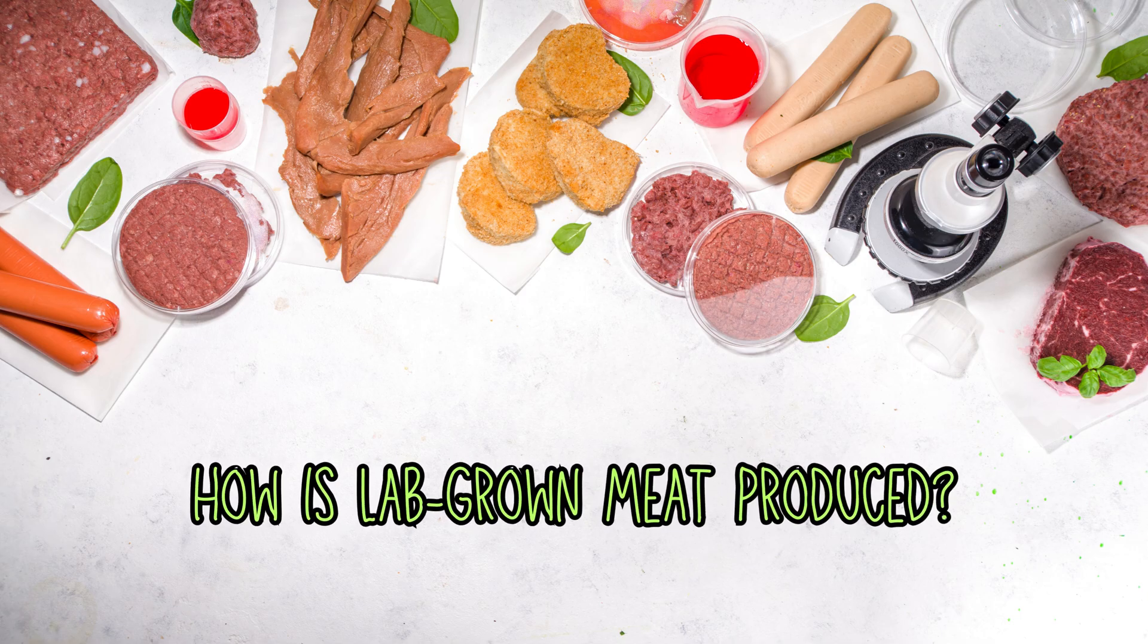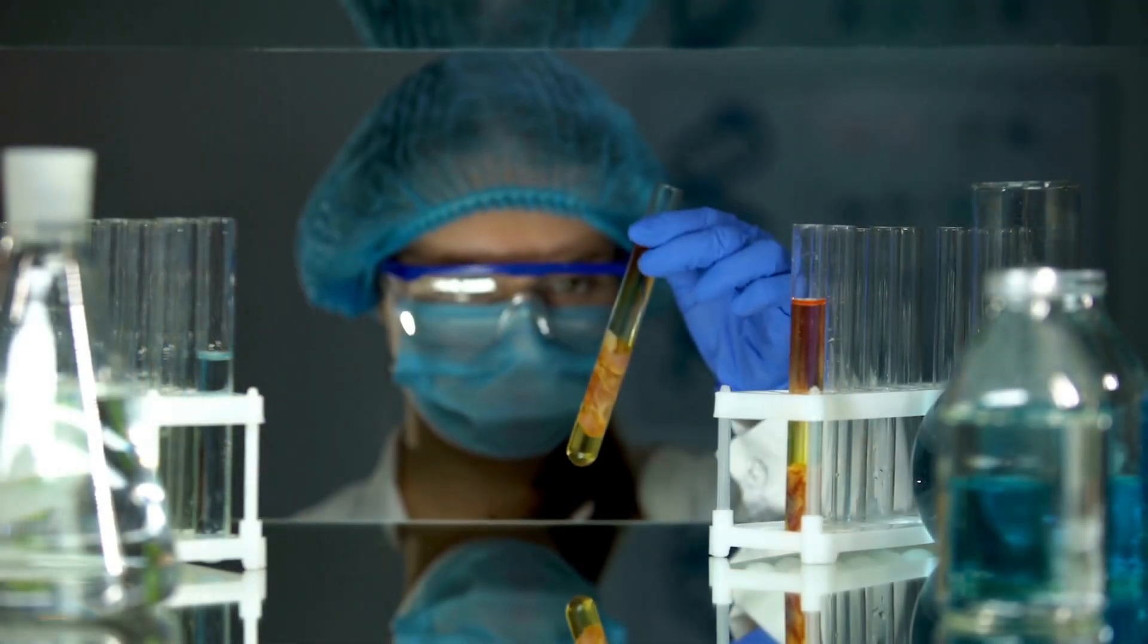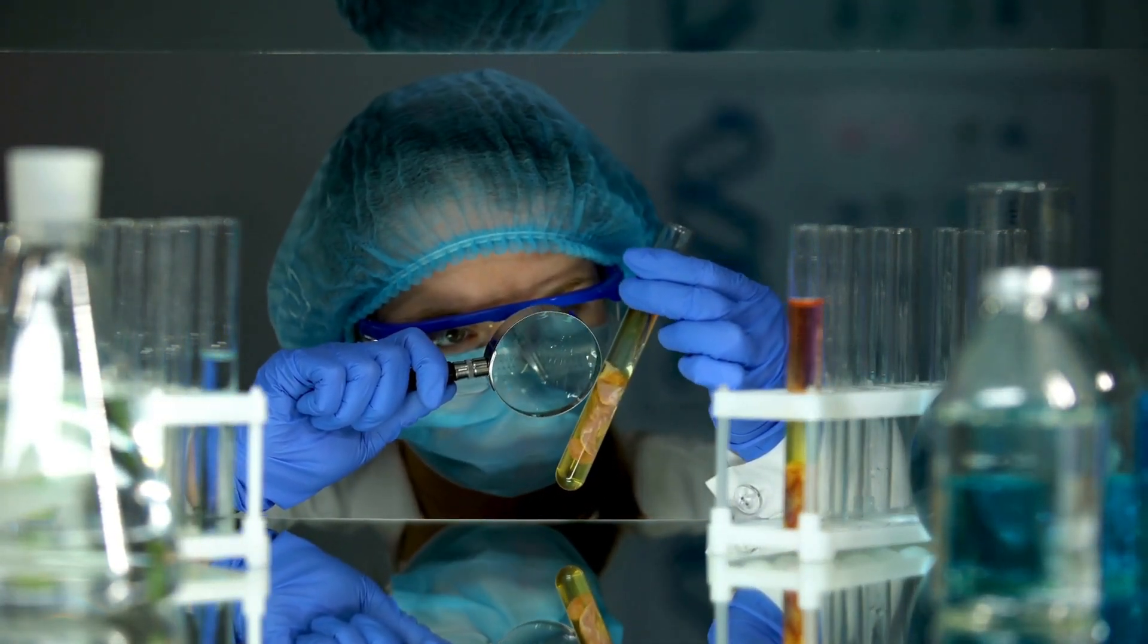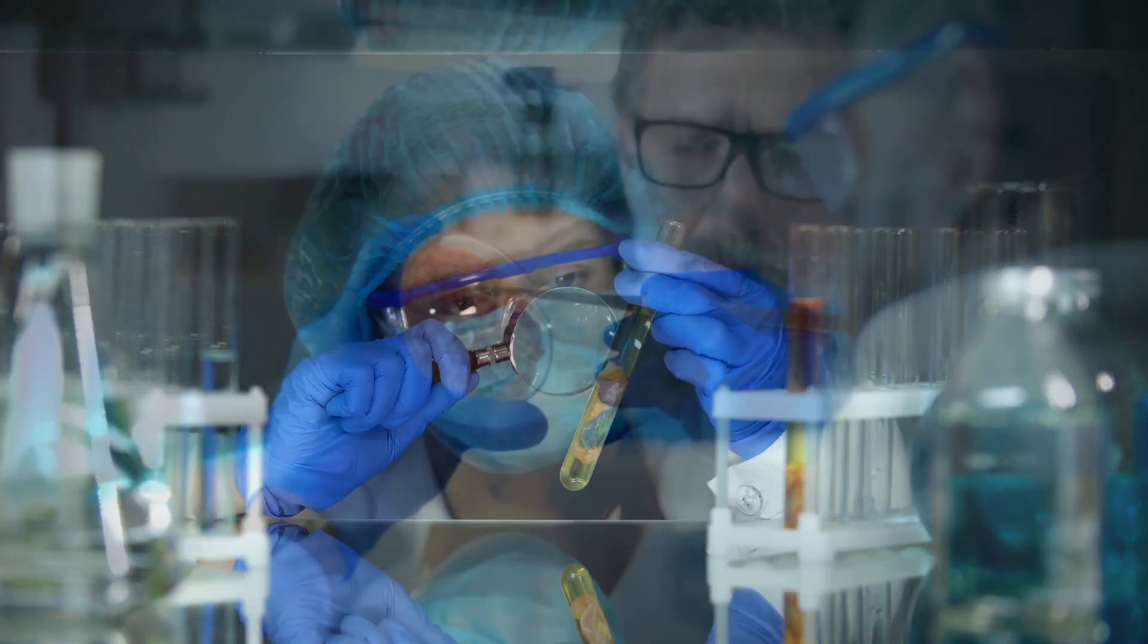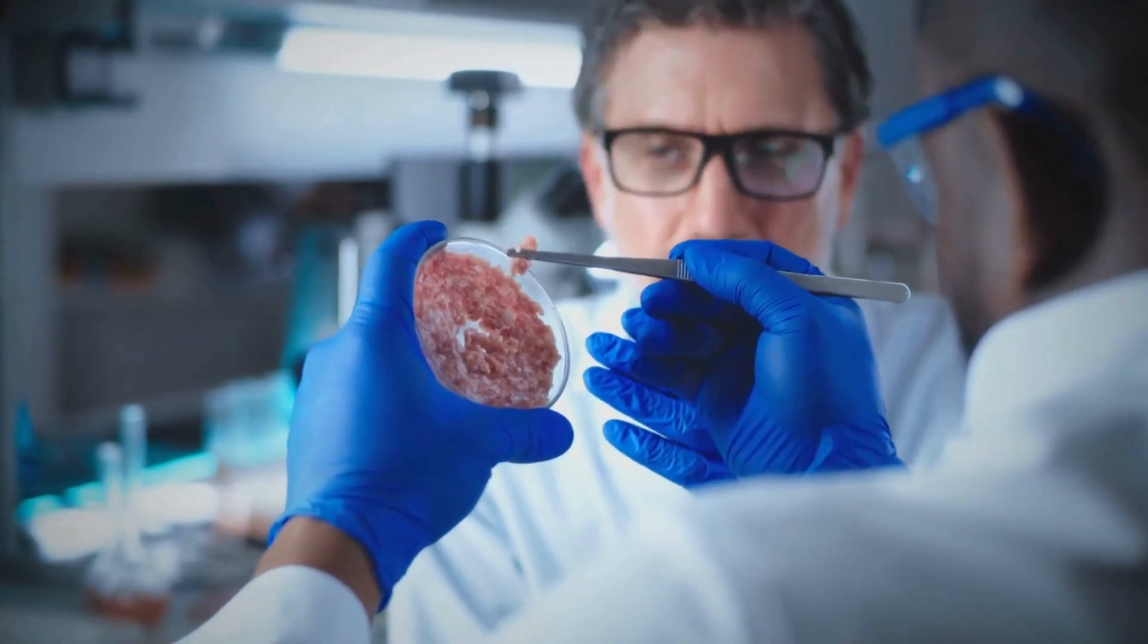How is lab-grown meat produced? The production process begins with a small sample of animal cells, which are then placed in a nutrient-rich culture medium. These cells are incubated in bioreactors, where they grow and multiply under optimal conditions. Over a few weeks, they develop into muscle tissue ready for processing.